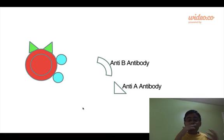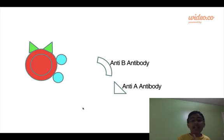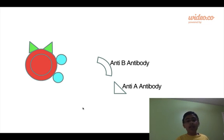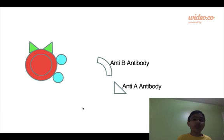AB is a mix of A and B but has no antibodies. If it had anti-A antibodies, then it would attack the A part of itself, and if it had anti-B antibodies, it would attack the B part of the cell itself. So it would essentially be attacking itself.